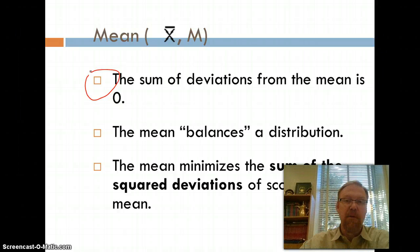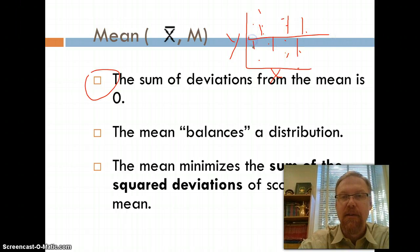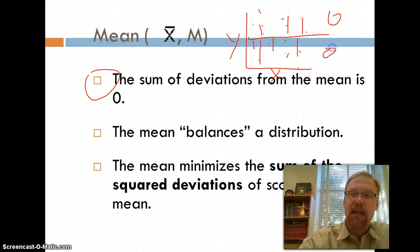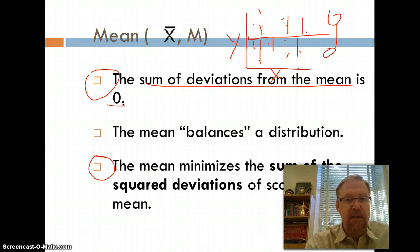The sum of deviations from the mean is zero, in fact always. The mean balances a distribution. When I drew my little scatter plot here with all these little scores and we put the mean in there and we look at the difference, we add up all the differences. It's sort of like it balances. This side and this side get balanced somehow. Let me erase my ink here.